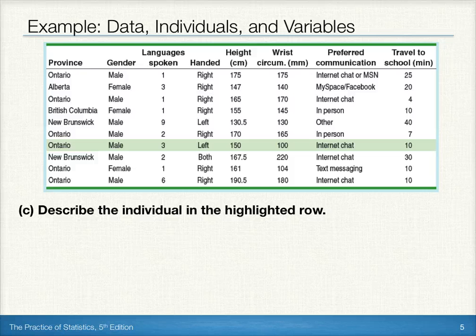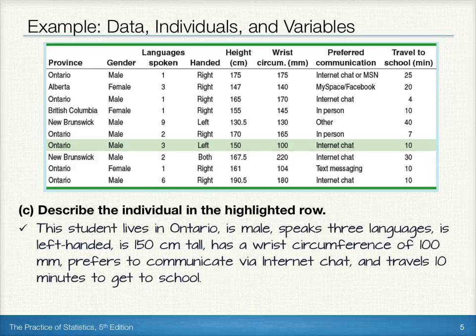Finally, let's describe the individual in the highlighted row. For this example, the individual that's highlighted was from Ontario, is a male, and speaks three languages. The student was left-handed, is 150 centimeters tall, has a wrist circumference of 100 millimeters, and prefers to communicate via internet chat. Finally, the student takes 10 minutes to get to school.